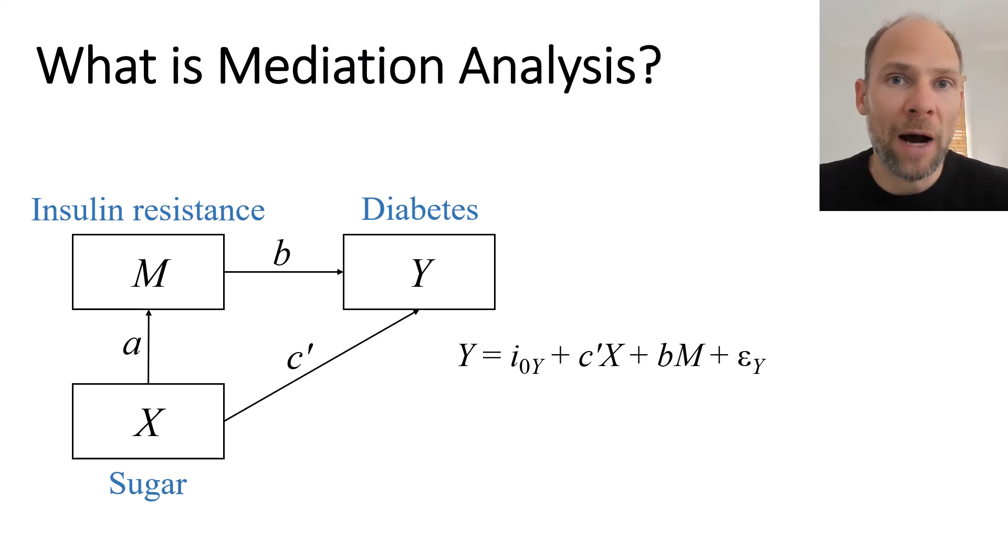First we have Y, so Y has an equation with an intercept term i0Y, and then there is a coefficient c' that characterizes the direct effect of X on Y. There's also an effect of M on Y that is quantified by the b regression coefficient and there's an error variable εY as well. We may expect that not all of the variability in the diabetes outcome may be explained by X and M.